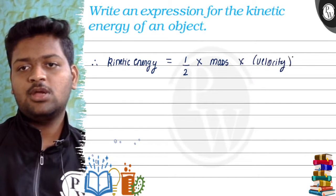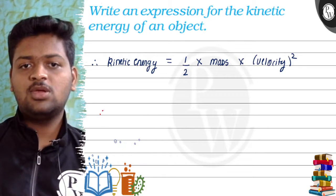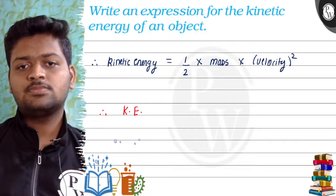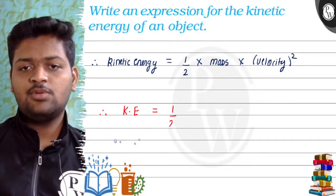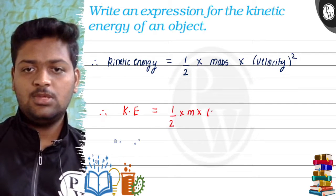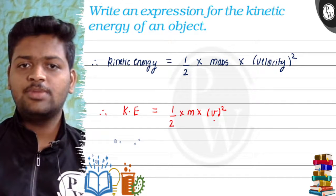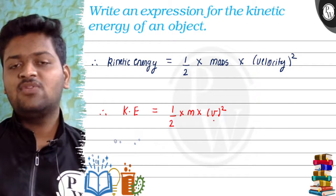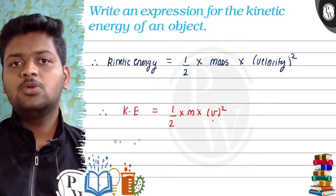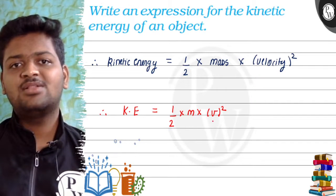In symbolic form or short form, kinetic energy KE is equal to half into M into V square. Kinetic energy definition: kinetic energy is the energy possessed by an object due to its motion. So this is our final answer to the question.